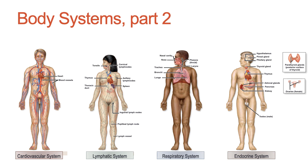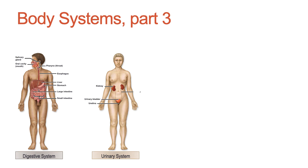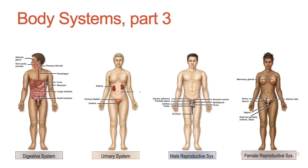The endocrine system secretes hormones and regulates body processes — it's kind of the master controller of the body. The digestive system processes food so that the body can ultimately absorb nutrients, and it also functions in waste removal. The urinary system controls fluid balance in the body and also contributes to waste removal. And then we have the male and female reproductive systems, which produce sex hormones and contribute to the reproduction of a new human.